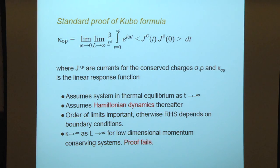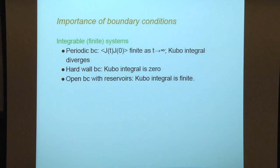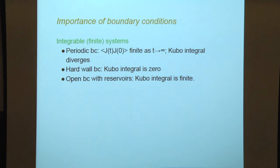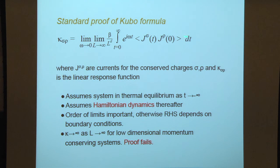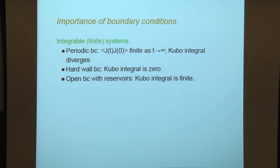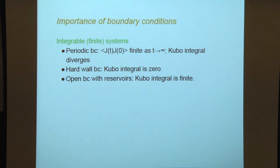Why do I say the right-hand side depends on boundary conditions if you don't take the thermodynamic limit first? If one looks at integrable finite systems — not taking the thermodynamic limit — consider first periodic boundary conditions. In that case, the current-current correlation function is typically finite if there's a conservation law forcing it to be finite as t goes to infinity. So with periodic boundary conditions, it's pretty obvious that the Kubo integral will diverge. Also, with hard wall boundary conditions, this integral is actually zero, because the integral can be related to the rate of change of some charge — a center of charge.